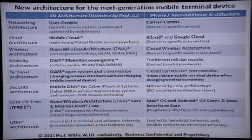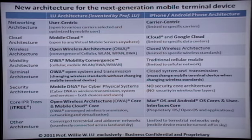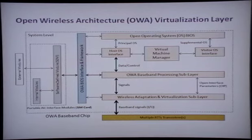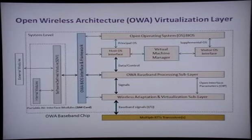Right now, iPhone, Android phone — they're limited to GSM, TDMA, CDMA, whatever they call 3G, 4G, LTE. It's still limited to specific radio transmission technologies. In the future, we are open, based on the open wireless architecture. We developed technologies called open wireless architecture for almost 20 years. This is a virtualization layer that can support multiple radio transmission technologies, so the baseband can support any wireless standards.